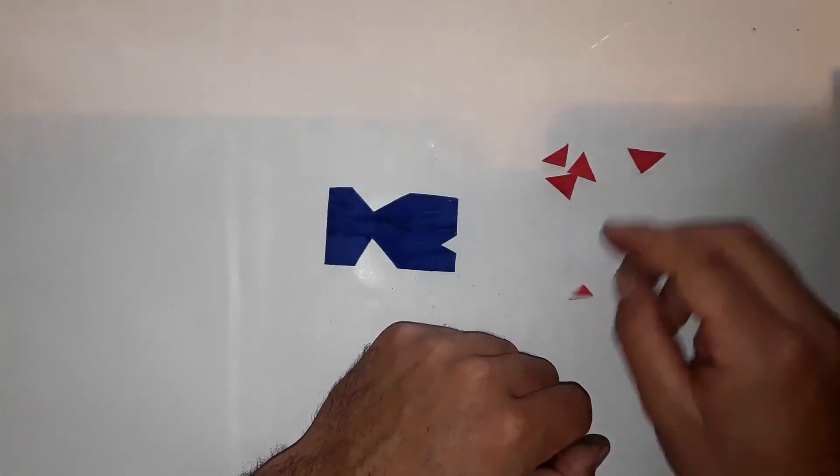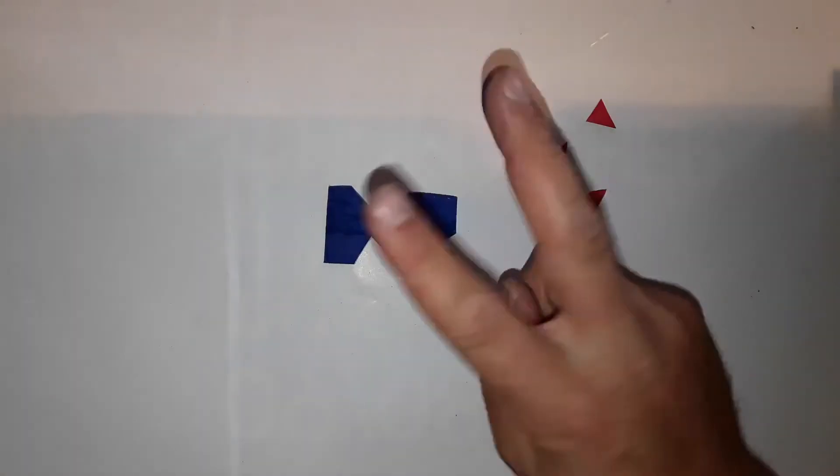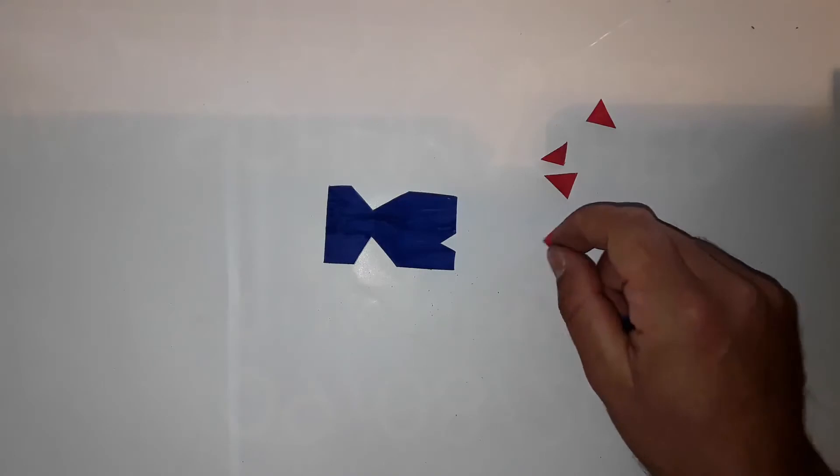Now we glue the fins together. We need the glue and the three triangles. We need two triangles for one fish.